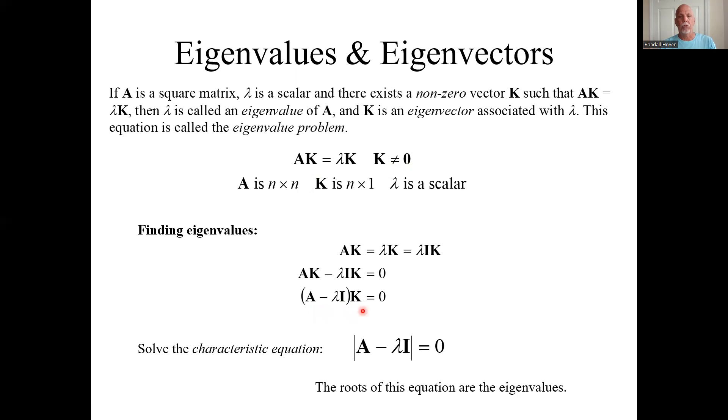So to make sure this doesn't just have the trivial solution, I need this guy's determinant, this whole A minus lambda I, I need it to be zero.